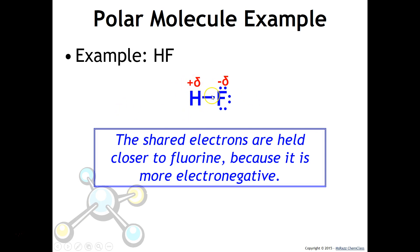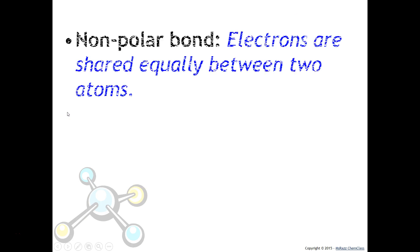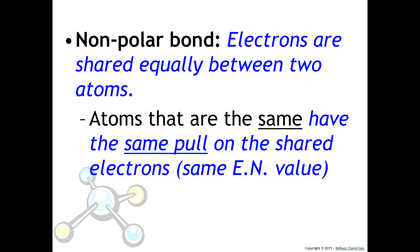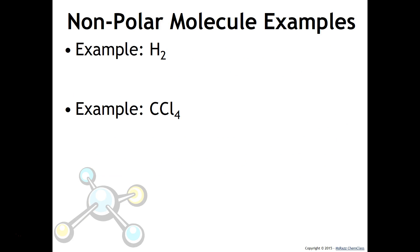When you think of polar, it has two poles — like a magnet with a north and a south pole. Nonpolar bonds are where electrons are shared equally between two atoms. For example, atoms that are the same have the same attraction for the shared electrons because they have the same electronegativity value. So H2 is considered nonpolar.